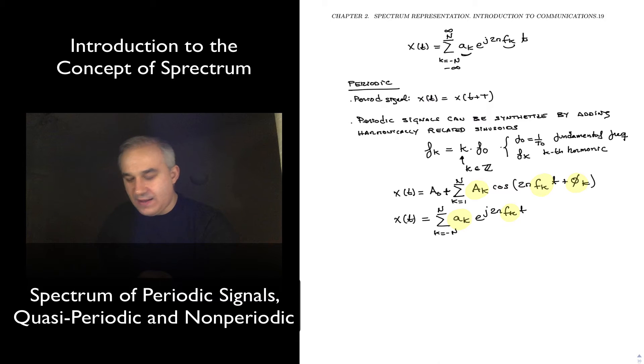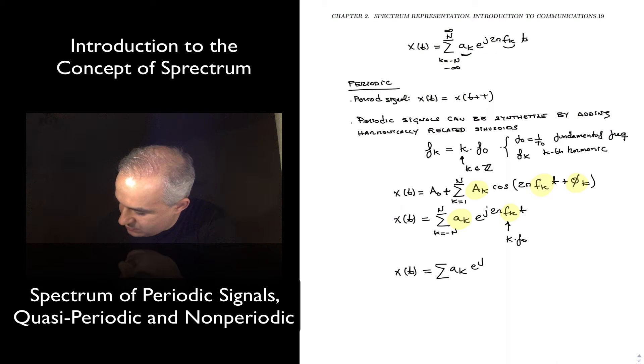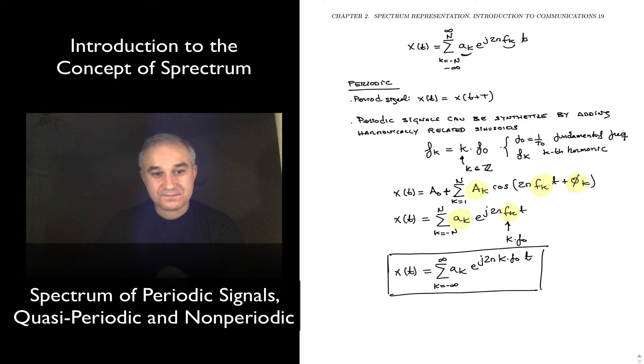What we see here is that we can constrain the problem a little bit more. In the case of periodic signals, the spectrum is harmonically related, and so we can substitute f_k for k*f_0. So we have k*f_0*t, and in general, I'm going to go from minus infinity to infinity, and that's really the Fourier series expansion.